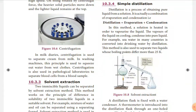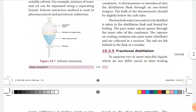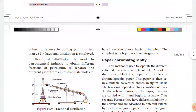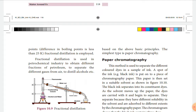Simple distillation is a combination of evaporation and condensation, used to separate liquids like sea water which contains dissolved salt, so pure water can be obtained from brine solution. Fractional distillation is used to separate two or more miscible liquids whose boiling points differ by less than 25 Kelvin — for example, to distill alcohol or to separate different gases from air.